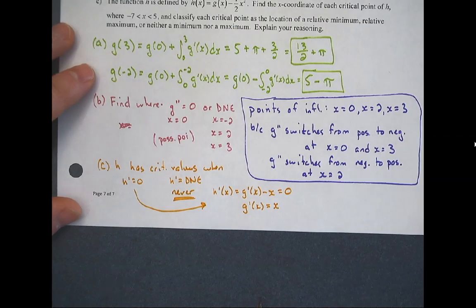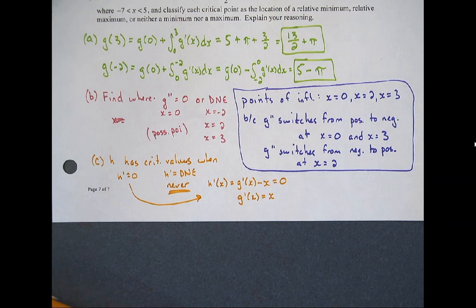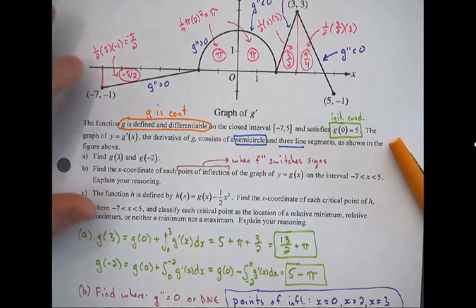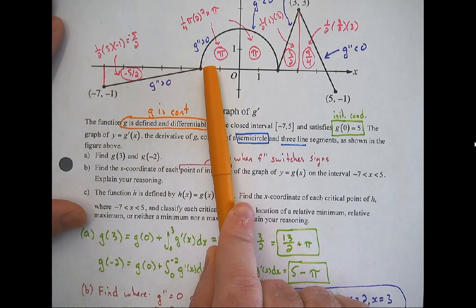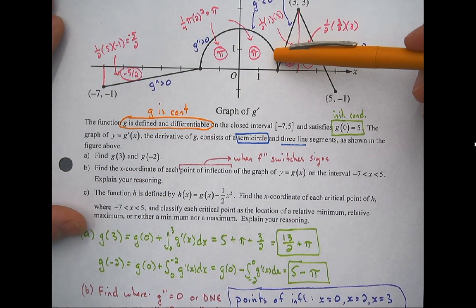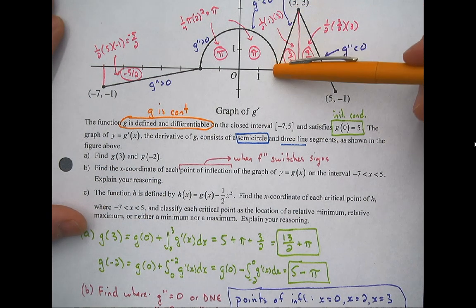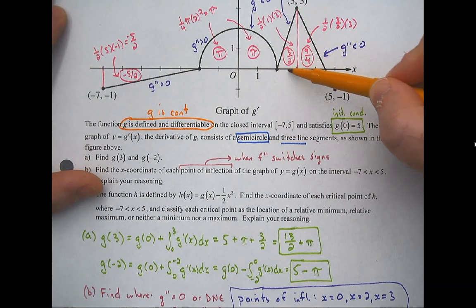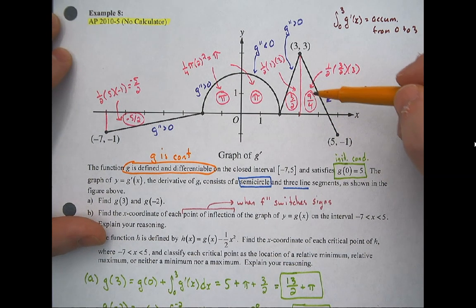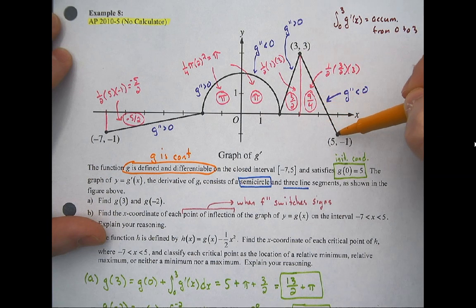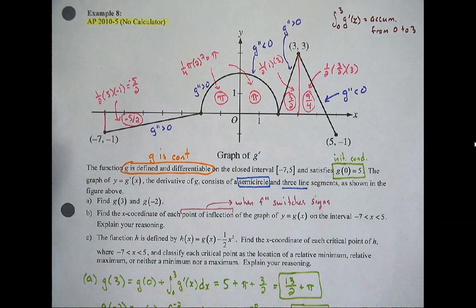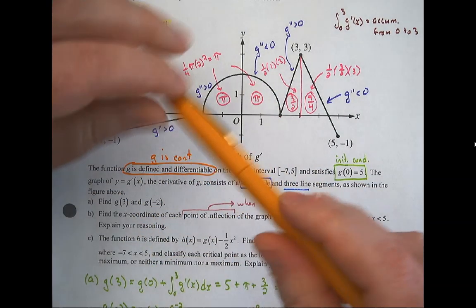Examining sections of the graph: on [−7,−2], y-values are between 0 and −1 but x-values are negative — no match. On [−2,0], y-values are positive but x-values are negative — no solutions. On [0,2] (semicircle): y-values are positive and x-values are positive — there must be a solution. On [2,3]: y-values go from 0 to 3 and x-values go from 2 to 3 — another solution. On [3,5]: y-values decrease from 3 to −1, x-values are all greater than 3 — no solution.